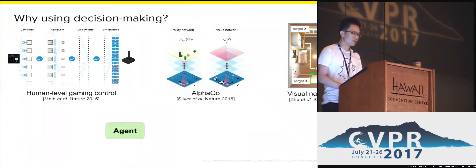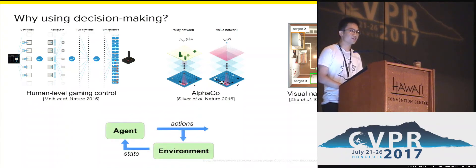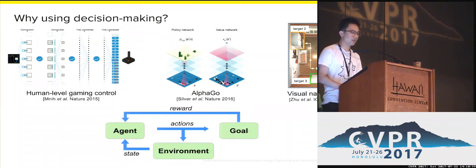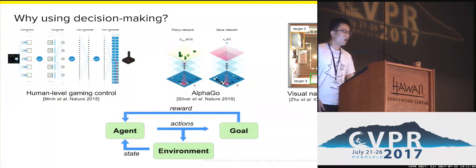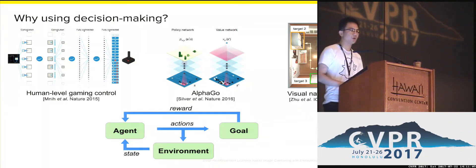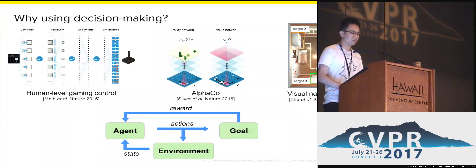Among all these works, there is an agent that interacts with the environment and takes a series of actions to reach a predefined goal. Reinforcement learning is used to train the agent with reward as feedback. All these works are very good at capturing global information — at each time step, they make a decision with the big picture in mind.